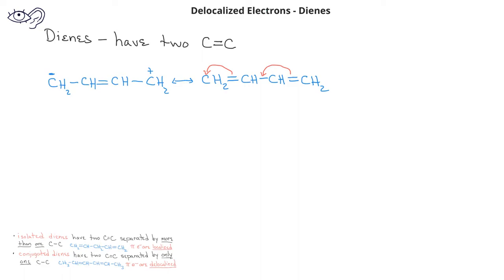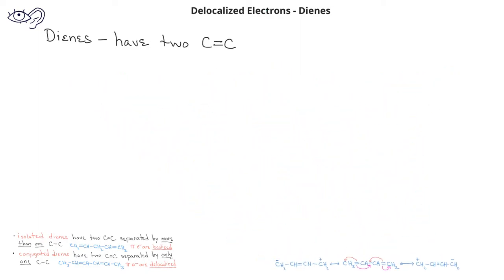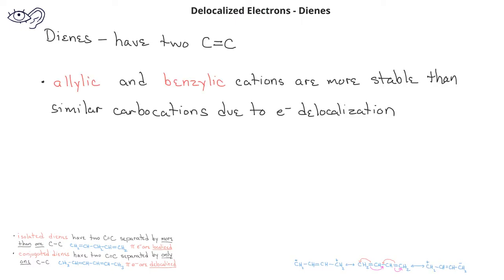Alternatively, we can start with the pi bonds at the first and third carbons and move the pi electrons to the right. In this case, we get another resonance form where the carbon on the left is a carbocation and the carbon all the way on the right is a carbanion, or has a negative charge. In general, allylic and benzylic cations are more stable than other primary cations due to electron delocalization.